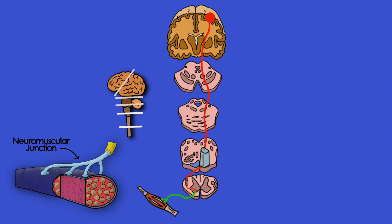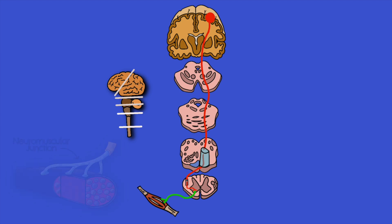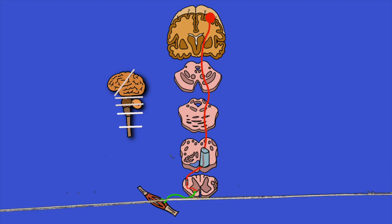To summarize: the lateral corticospinal tract crosses over in the medulla and involves 85% of the total fibers belonging to the corticospinal tract. I hope that's been useful for your learning. Don't forget to subscribe and click the notifications icon to be updated when new videos are released.